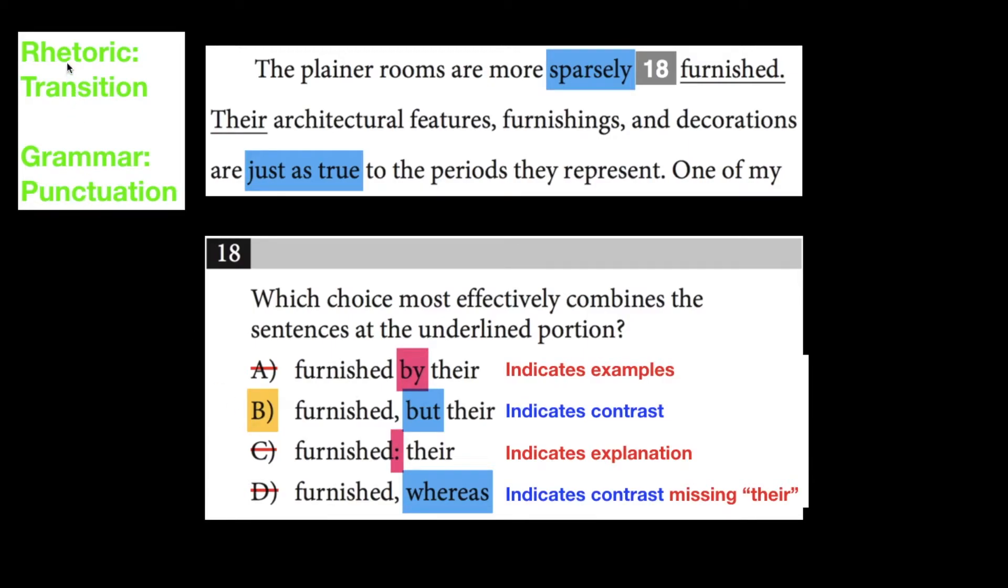18 is a question on transitions and it's also a question dealing with punctuation. Planar rooms are more sparsely furnished. Their architecture features, furnishings, and decorations are just as true to the periods they represent.